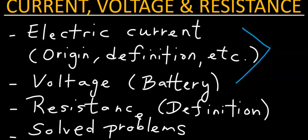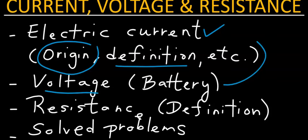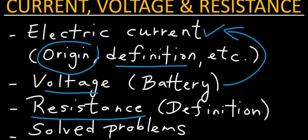In this video, we will talk about the concepts behind current, voltage, and resistance. In particular, we will talk about the origin and the definition of electric current, and how the application of voltage or potential difference produces electric current in a given circuit. Next, we will talk about the concept of resistance, and how resistance depends on things such as resistivity, which is material specific, and the dimensions of a given conductor. Finally, we will do some solved problems based on these concepts.